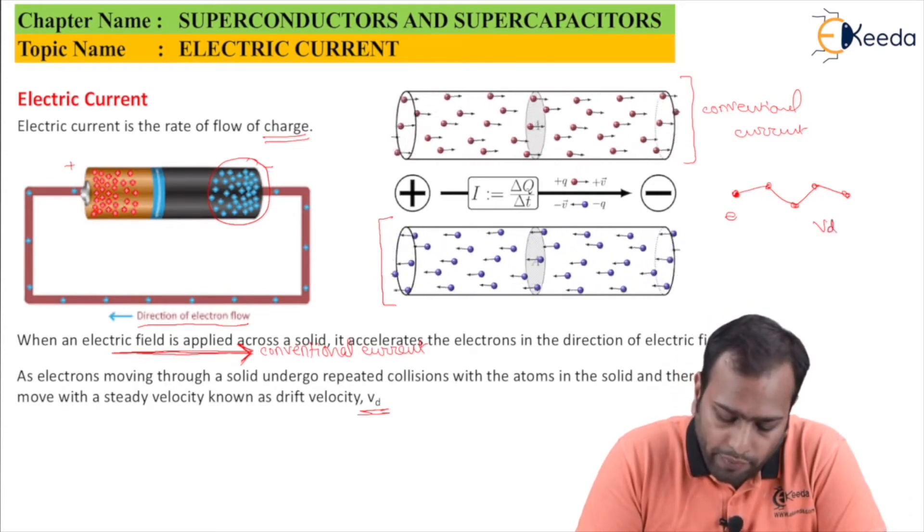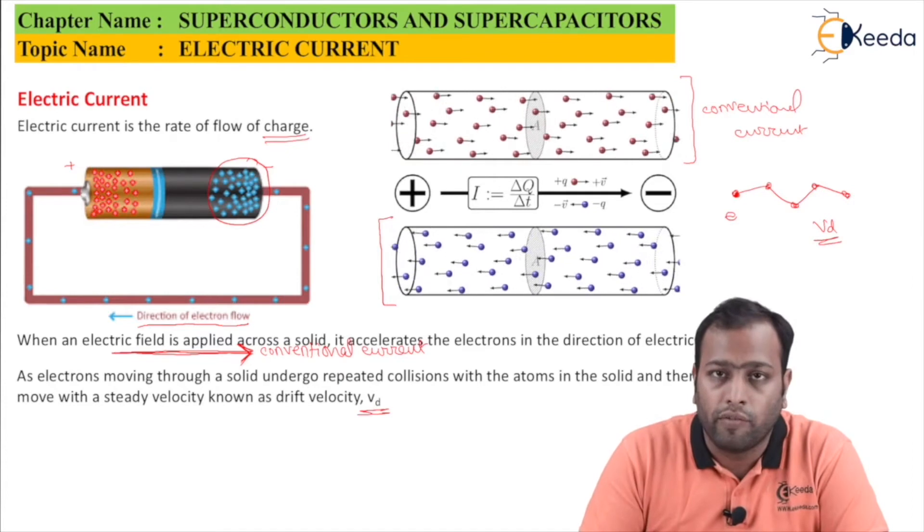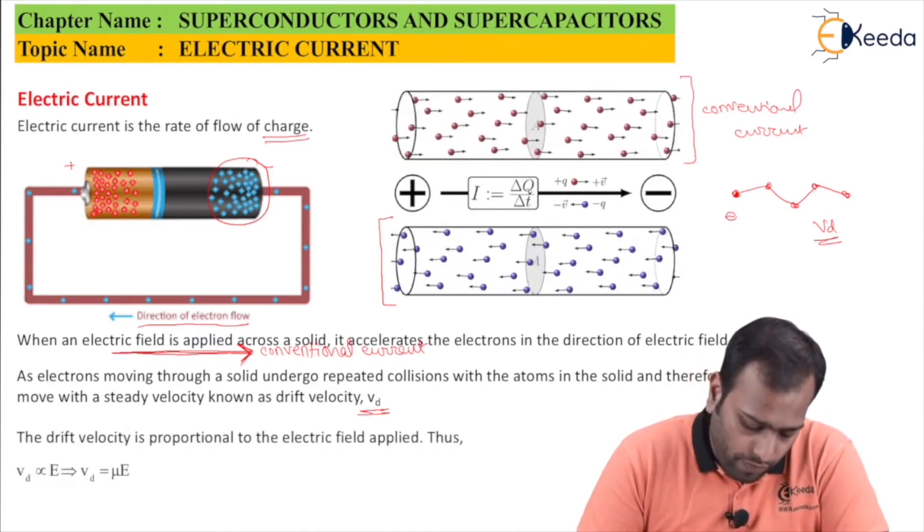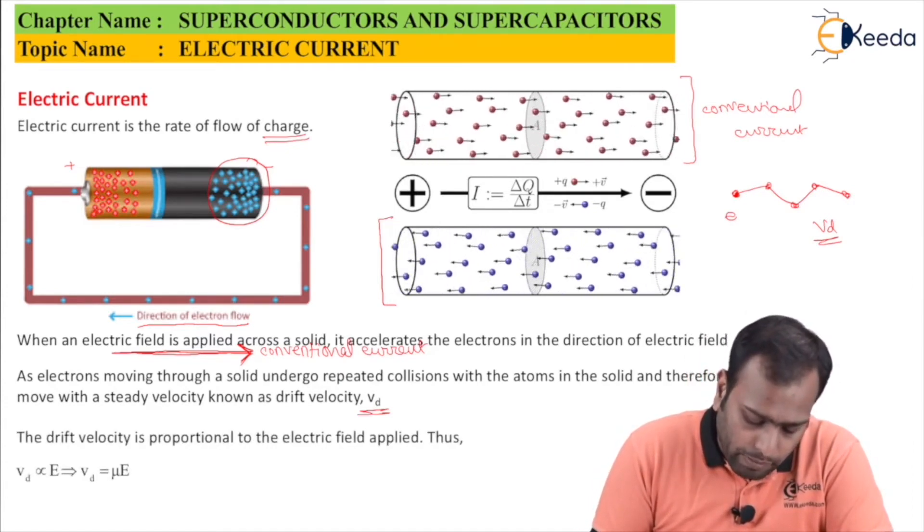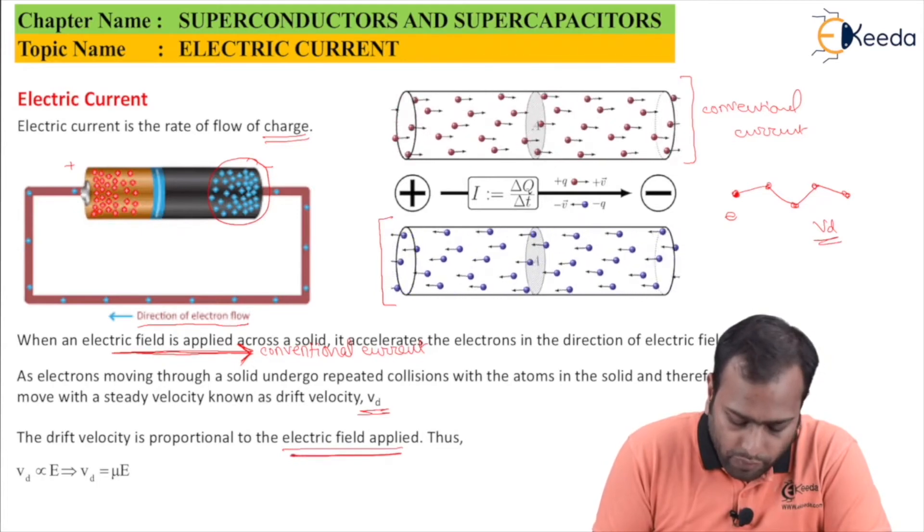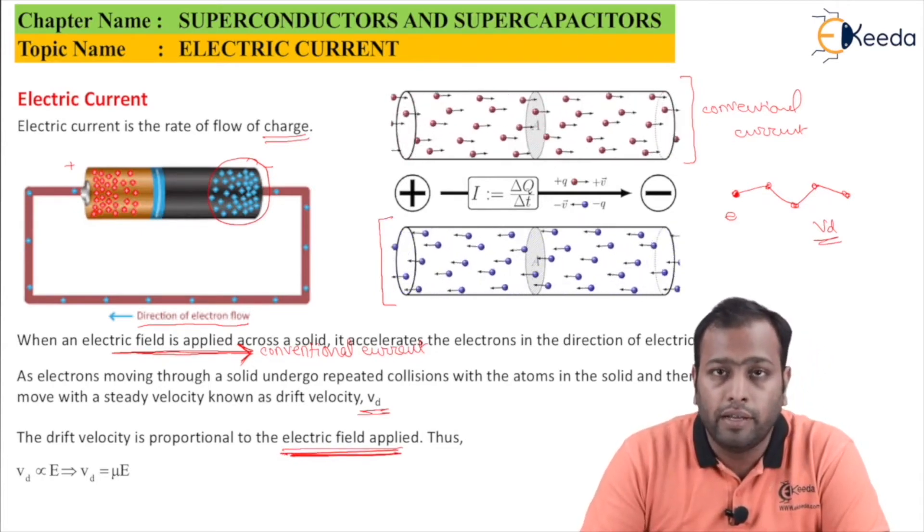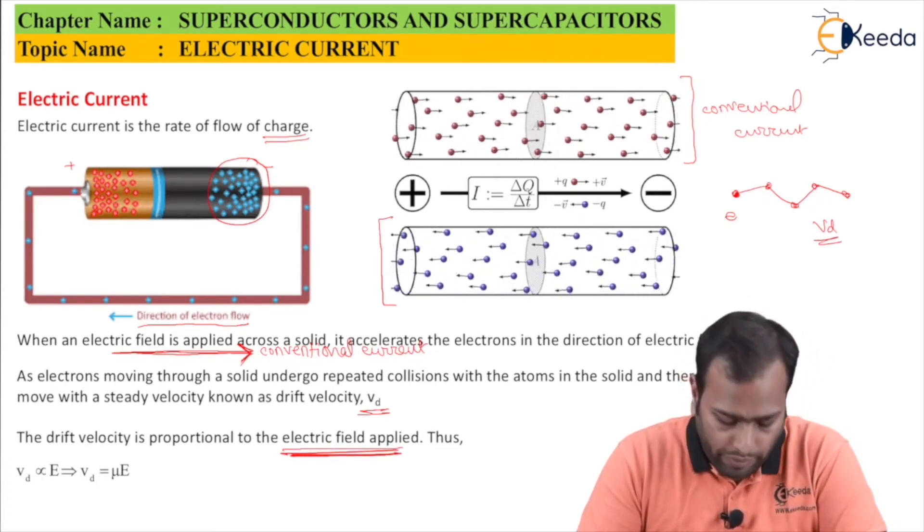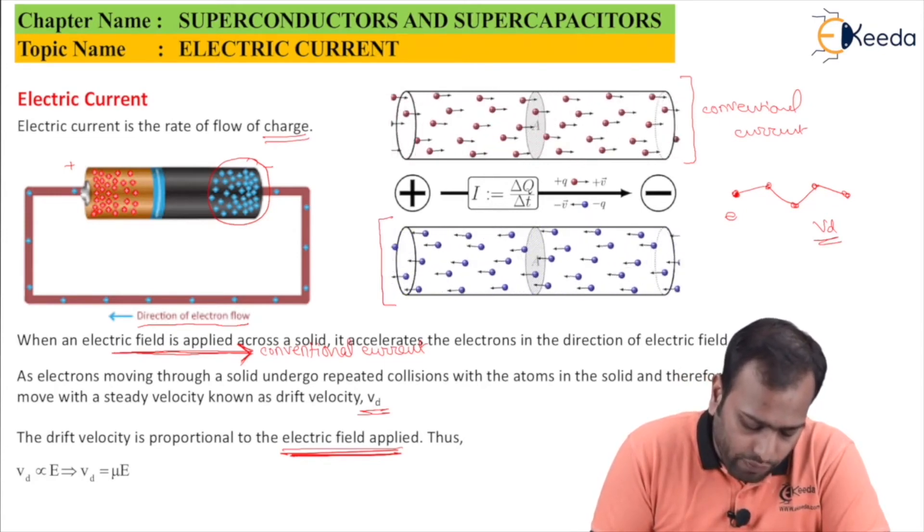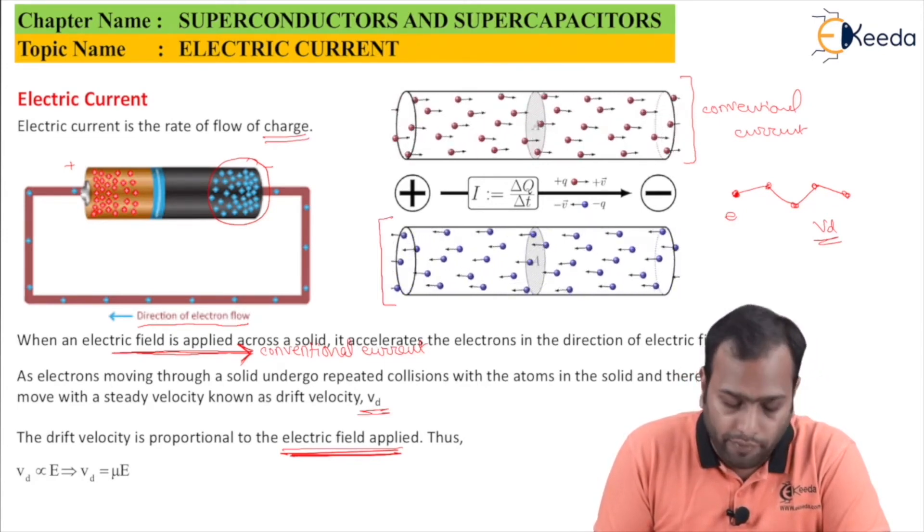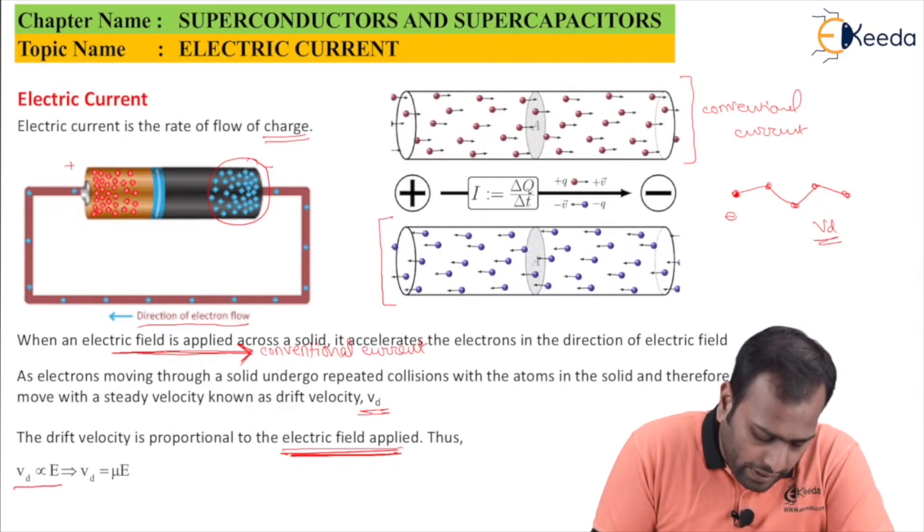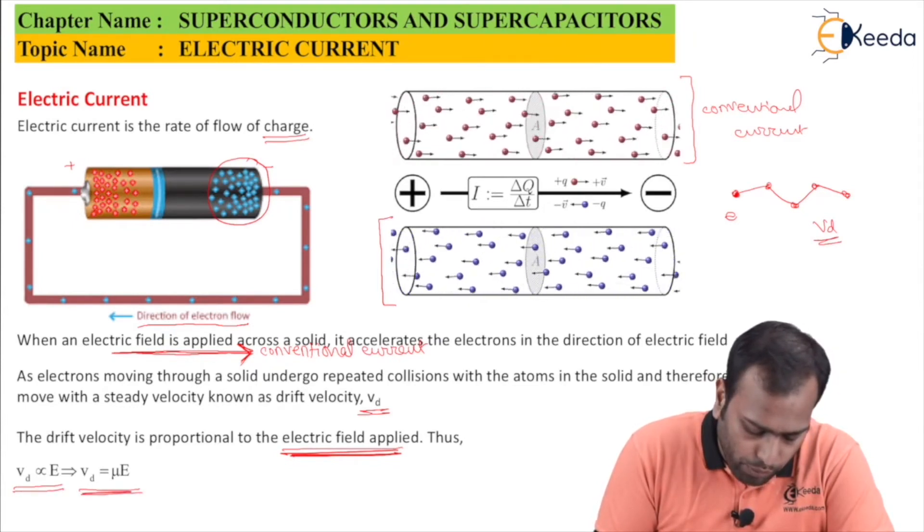The drift velocity is proportional to the electric field. Stronger the electric field, faster the electron would be drifting. Mathematically, Vd is directly proportional to E. Therefore, Vd equals mu times E. This mu is a constant, the constant of proportionality, and mu is called mobility.